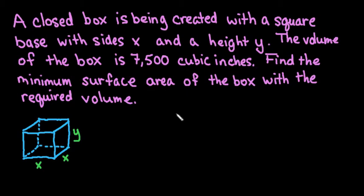For this video we're going to look at an application problem. A closed box is being created with a square base with sides x and a height y. There's a picture drawn down here. The volume of the box is 7,500 cubic inches and we want to find the minimum surface area of the box with the required volume.